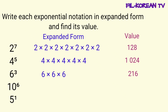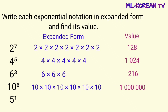Number 4, 10 to the 6th power. Okay, imumultiply natin ang 10 ng 6 na ulit sa kanyang sarili. Ang expanded form, 10 times 10 times 10 times 10 times 10 times 10. Ang value nito ay 1,000,000. Kapag ang base ay 10, para makuha kagad ang value, kung ilan yung exponent, yan ang number ng 0 na kasama ng 1. Kaya tingnan ninyo ito — yung 10 to the 6th power, ang exponent ay 6, at ang value niya ay 1,000,000. Ang 1,000,000 may 6 na 0. Kaya, hindi na ninyo kailangan pang isolve kapag ang base ay 10.